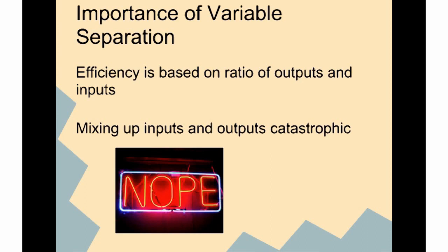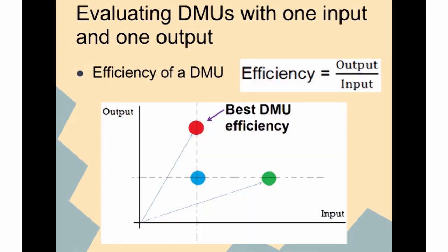Importance of variable separation: efficiency is based on the ratio of outputs and inputs. Mixing up inputs and outputs is catastrophic. The equation for efficiency is output over input.